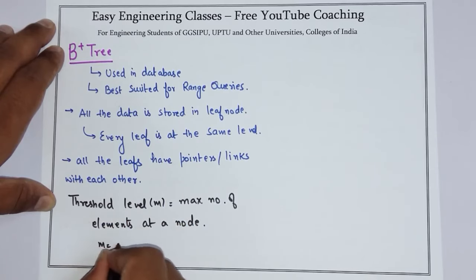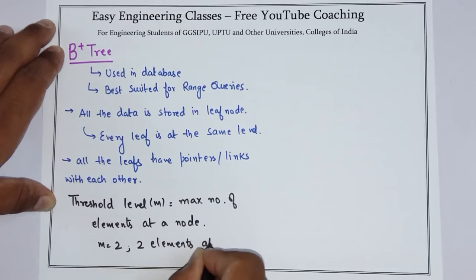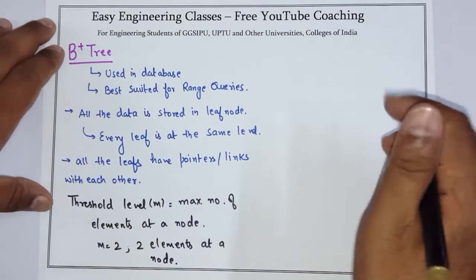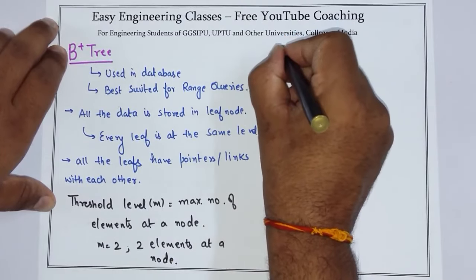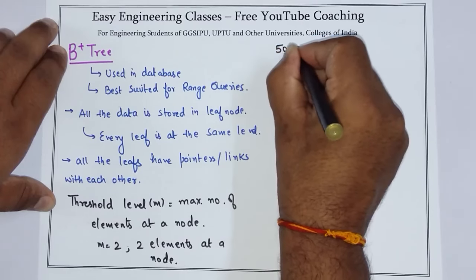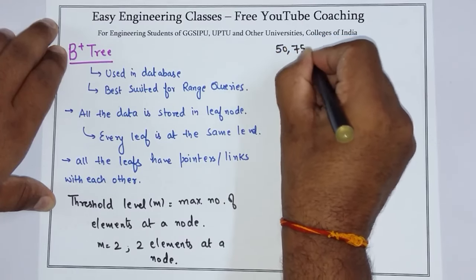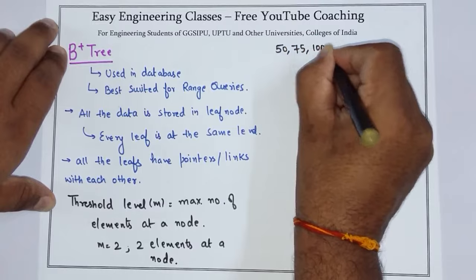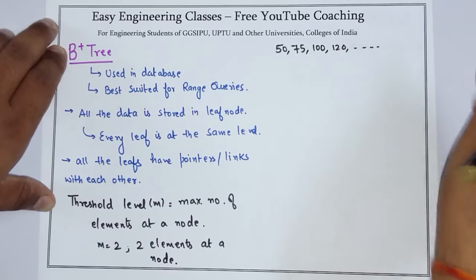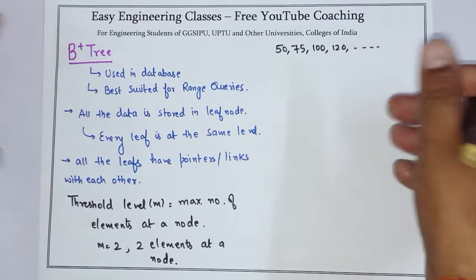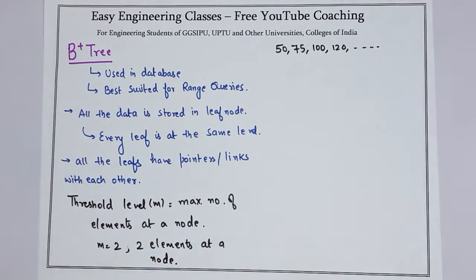If m is 2, then at one time I will have two elements at a node. Clear? Now we will see how to draw a B plus tree. Suppose the example that I am taking is to draw B plus tree for 50, 75, 100, then 120 and so on. Now let's start drawing a B plus tree for this example.